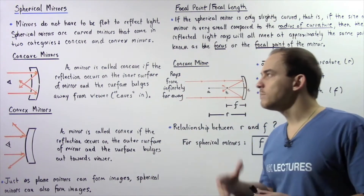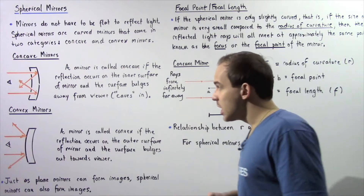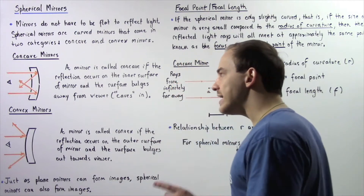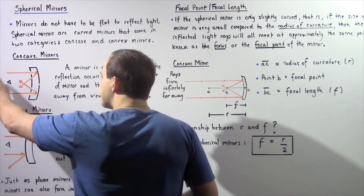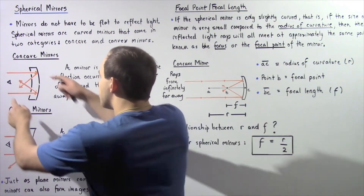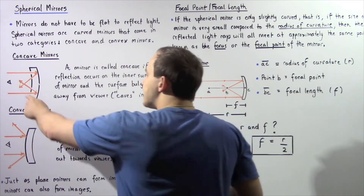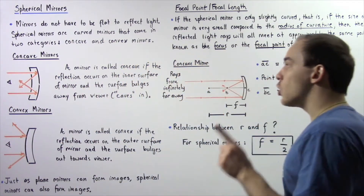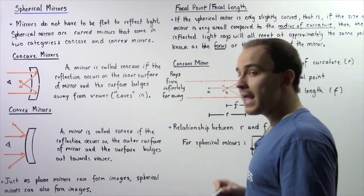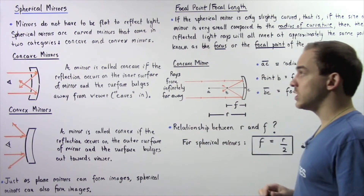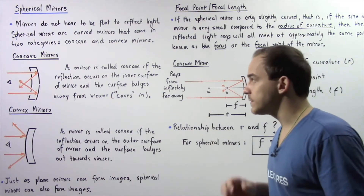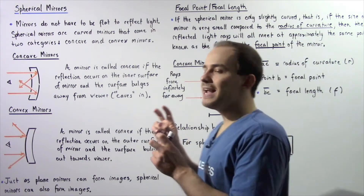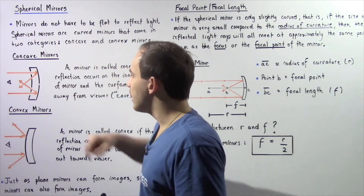Let's begin by describing what a concave mirror is. A concave mirror looks something like this. The rays of light are coming in from the left side and they're bouncing and reflecting off as shown. The viewer is also found on the left side of the mirror. A mirror is defined as a concave mirror if the reflection takes place on the inner surface of the mirror and the surface bulges away from the viewer — in other words, it caves in as described in the following diagram.